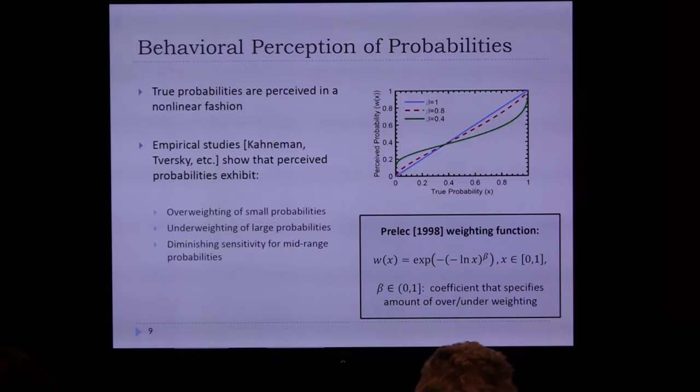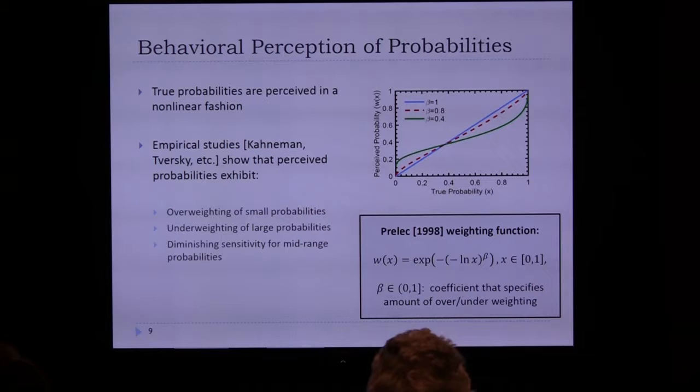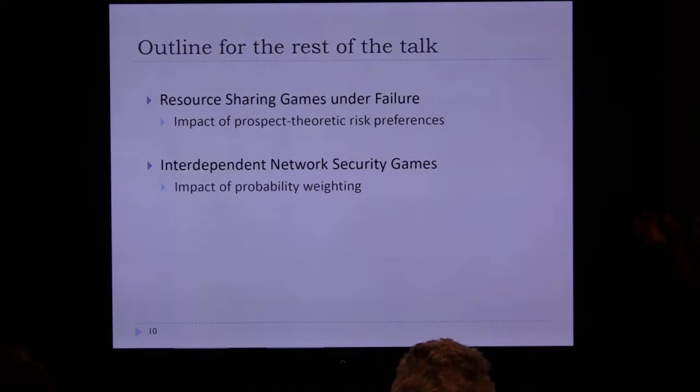Clearly, if people are perceiving values and probabilities in this skewed way, that's going to impact how they use resources when there are uncertainties, probabilities of failure, and different types of gains. The question then is: if we bring in these types of utility shaping, how does that impact the way people use shared resources?